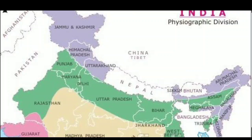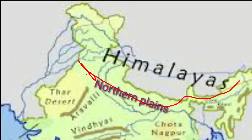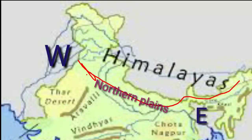These Great Plains are deposited by the three rivers — Indus, Ganga, Brahmaputra — and their tributaries. These rivers formed this Northern Great Plains. The length of the plain is about 2400 km and the width varies from 240 to 320 km. Its width increases from east to west. It covers an area of over 70,000 km². That is why it is called one of the world's largest plains.